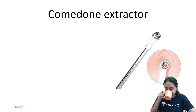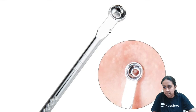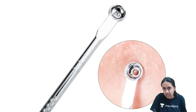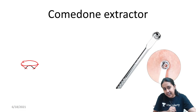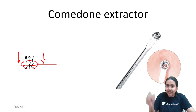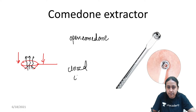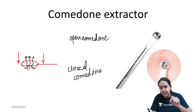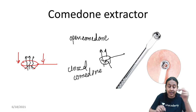The sixth instrument is the comedone extractor. Look at it carefully — it has a cup-shaped structure with a hole in the center. You place the cup over the comedone and press; the material from the comedone accumulates inside the cup through the central hole. It works on both open and closed comedones. For closed comedones, you may need to first create a small hole in the center of the closed lesion before applying the cup.